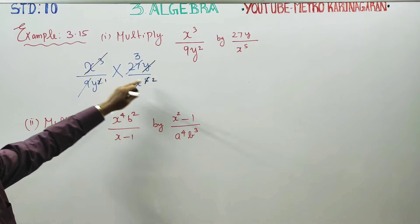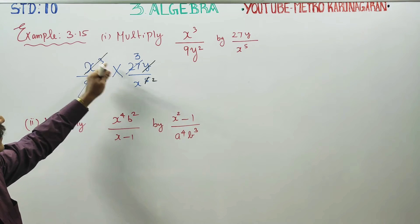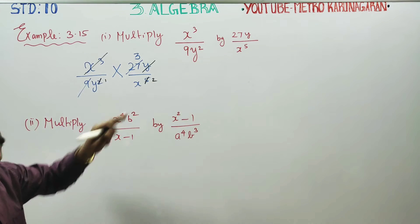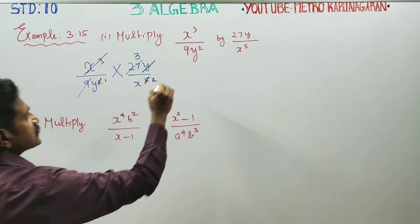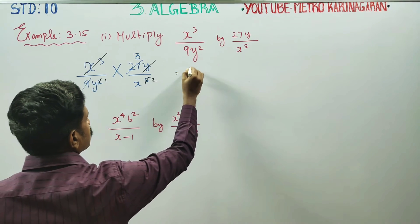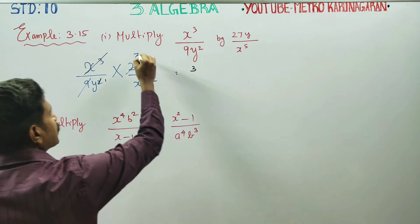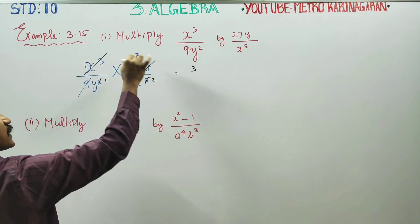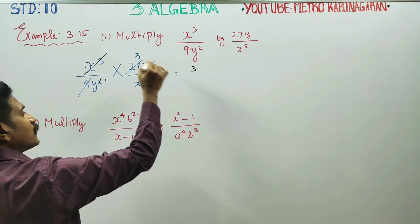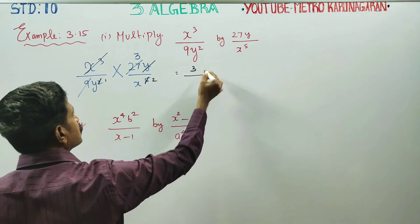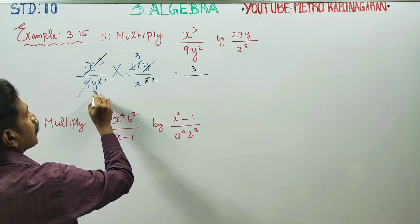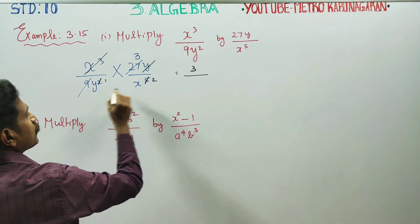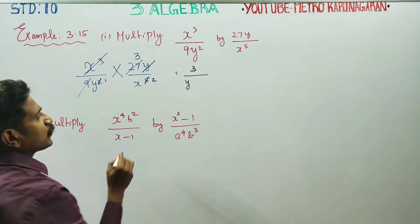When you cancel x power 3 against x power 5, you get x power 2 remaining. In division, powers subtract: 5 minus 3 is 2. The x cube cancels fully and y cancels fully, giving a balance. So the final answer for the first problem is 3 by x squared y.